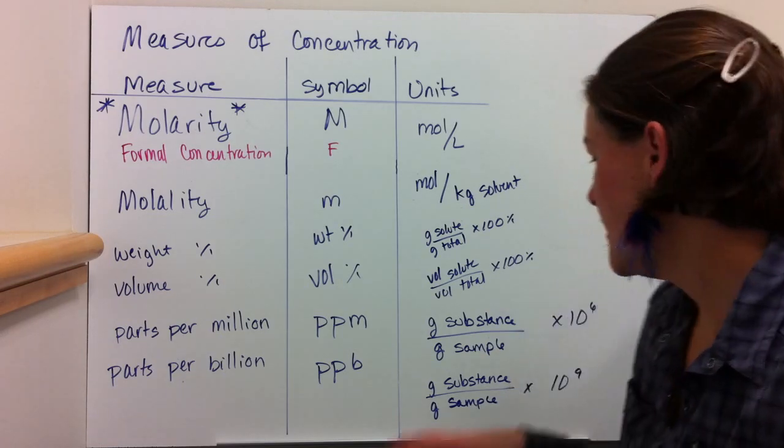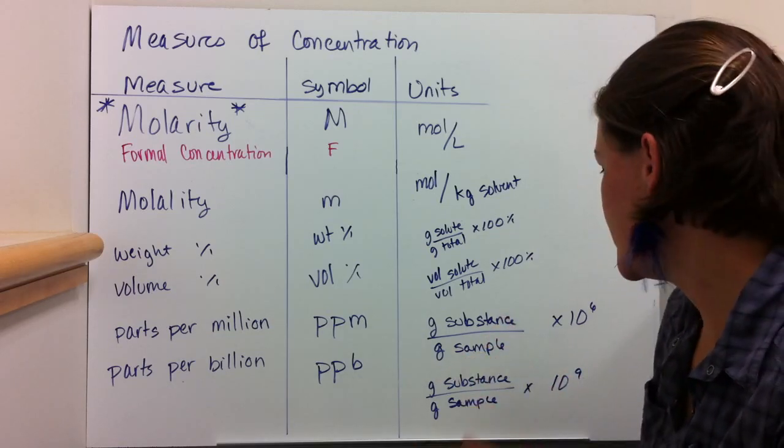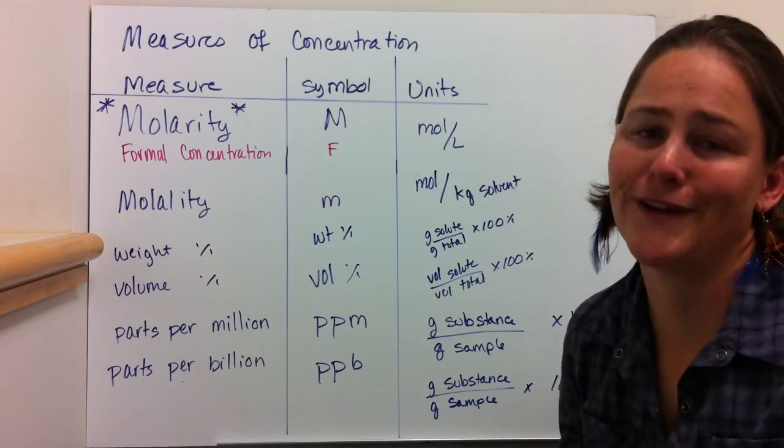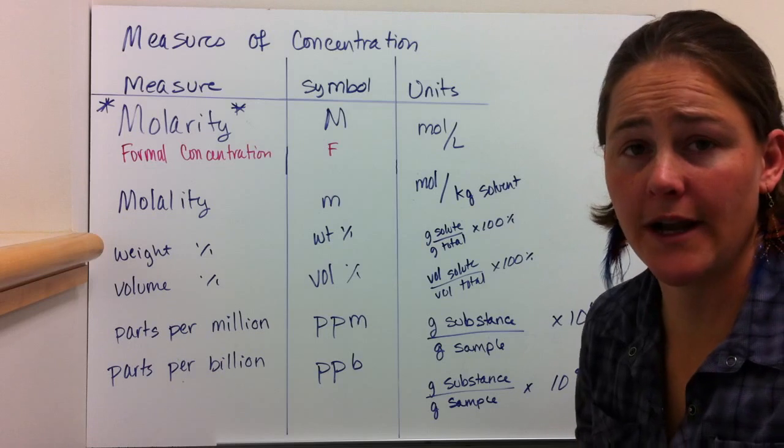Parts per million and parts per billion are the grams of the substance divided by the grams of the sample times either a million or a billion depending on whether it's parts per million or parts per billion. Those are really super handy.